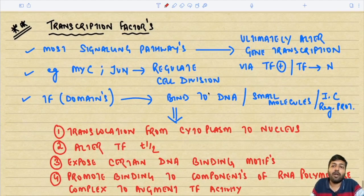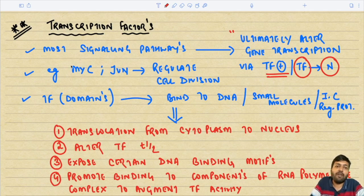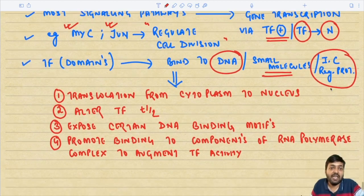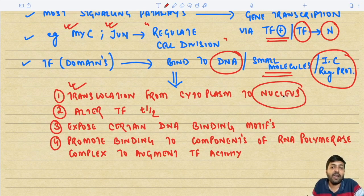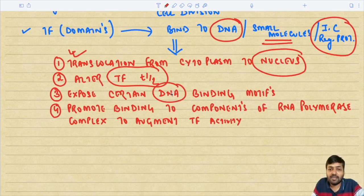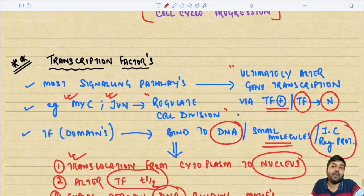Most signaling pathways ultimately alter gene transcription via transcription factor stimulation or translocation into the nucleus. Examples of genes encoding transcription factors include MYC and JUN, which regulate cell division. Transcription factor domains can bind to DNA, small molecules, or intracellular regulatory proteins, leading to translocation from cytoplasm to nucleus, alteration of their own half-life, exposure of DNA binding regions such as promoters or enhancers, and promotion of binding to components of the RNA polymerase complex to augment transcription. With this, we have completed part 4 of the series on cell as a unit of health and disease.